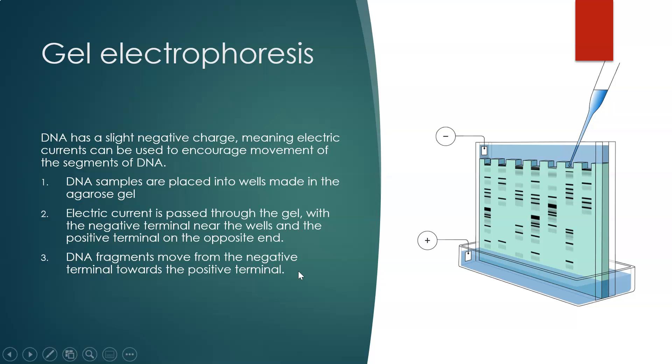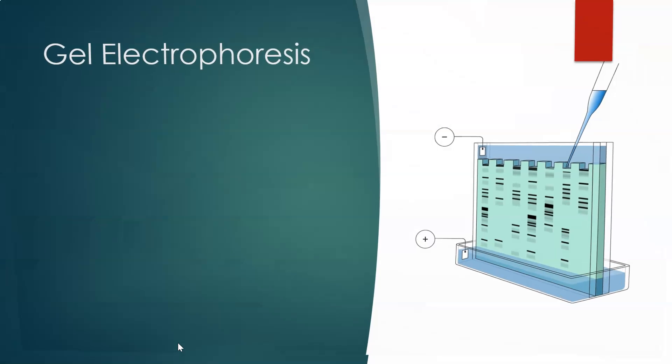The DNA fragments then move from the negative terminal towards the positive end. The smaller fragments move quicker because they're smaller than the large fragments, producing these unique bands in the gel. You can see those bands there.